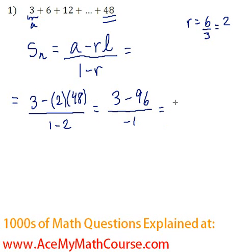Now 3 minus 96 is negative 93, divided by negative 1, which is positive 93. That's it, it is that easy. We're done, and the sum of this geometric series is 93.